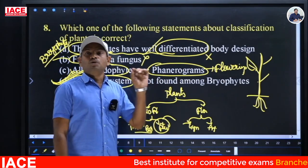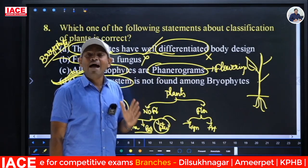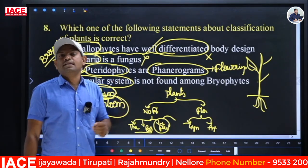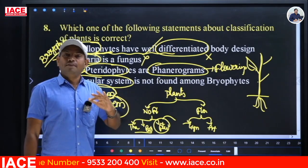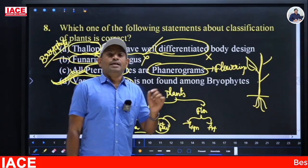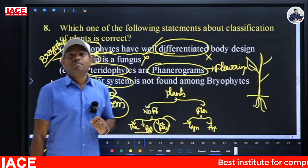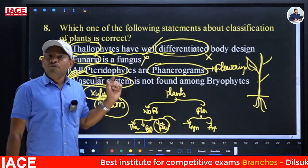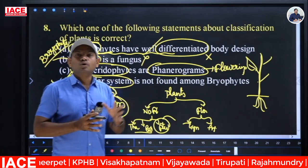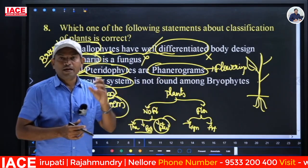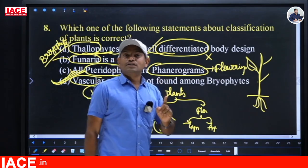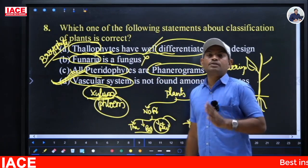Bryophytes are called the amphibians of the plant kingdom because they can live in moist places as well as on normal dry land. Pteridophytes are called the reptiles of the plant kingdom, also called ferns. Pteridophytes are also the first vascular cryptogams — the first non-flowering vascular plants.